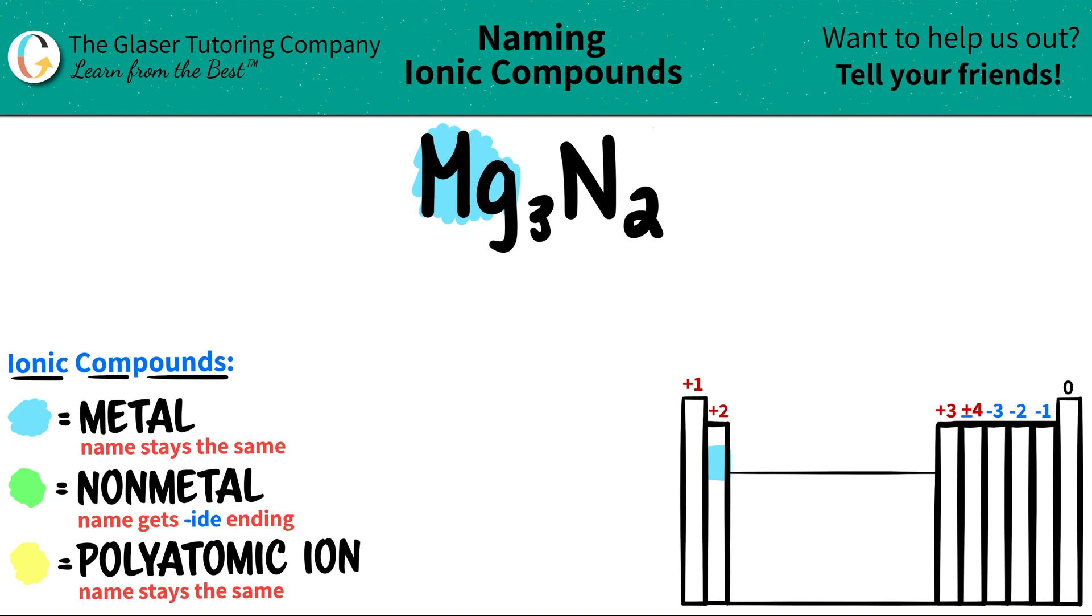Then we come over to N, which is nitrogen. Nitrogen is a non-metal. Nitrogen is over here on the periodic table. There's like a staircase here, so all of these are non-metals, and most of these are the metals.